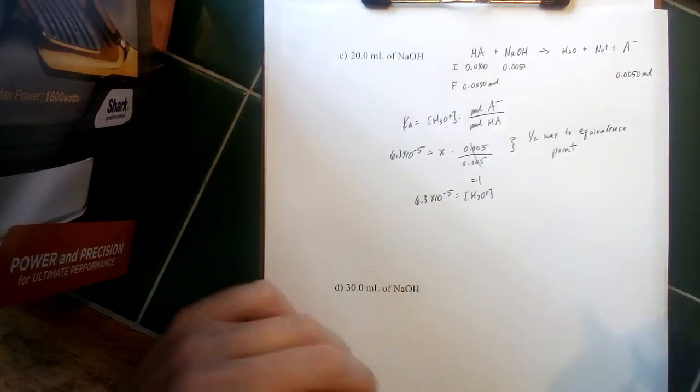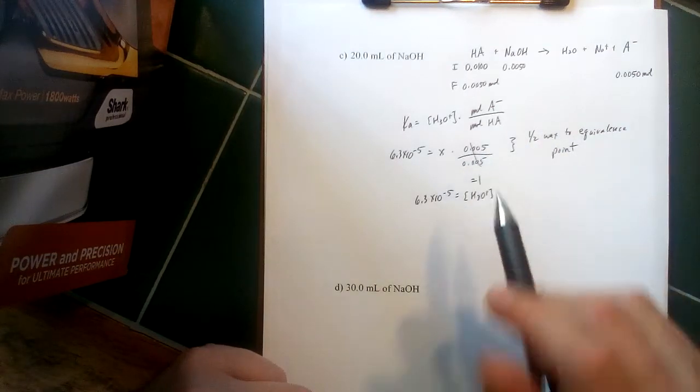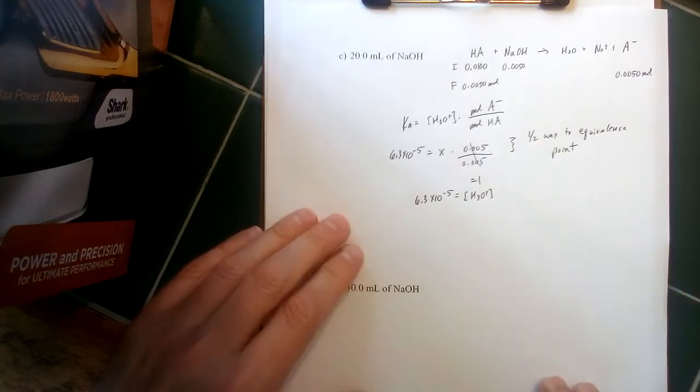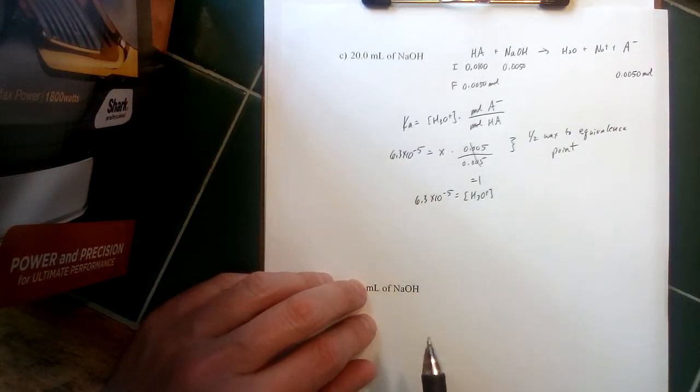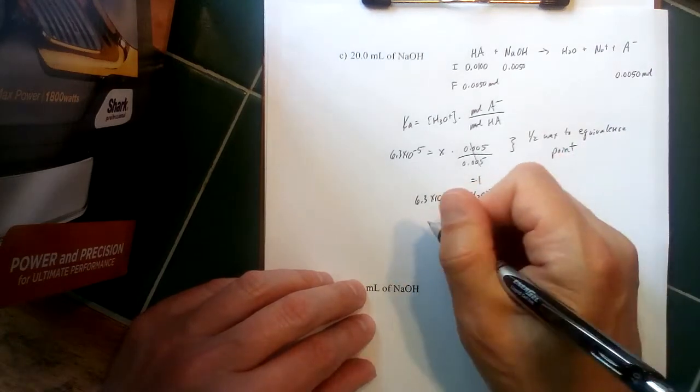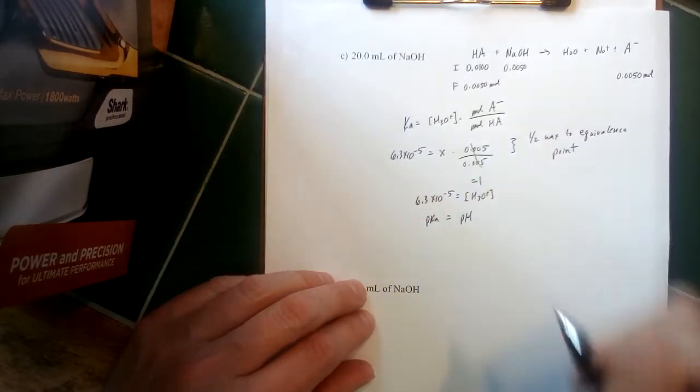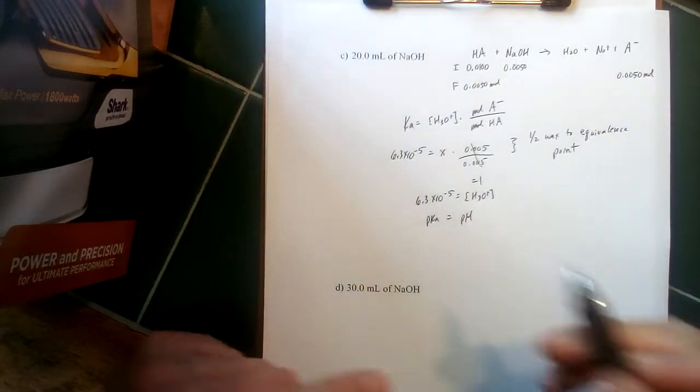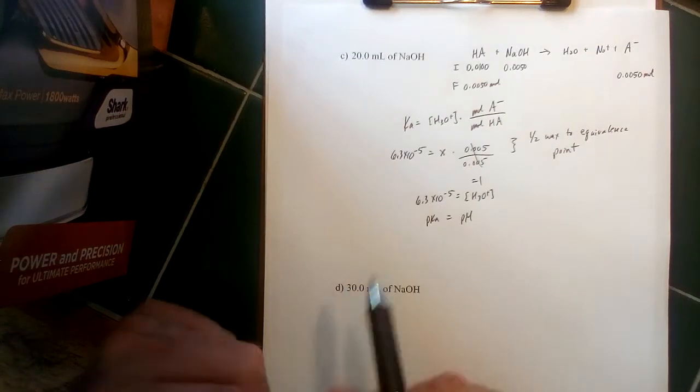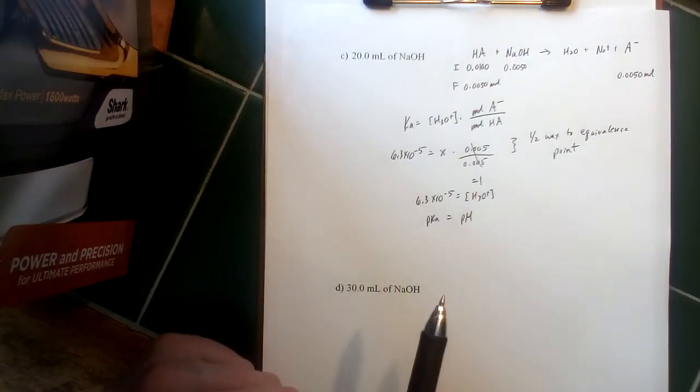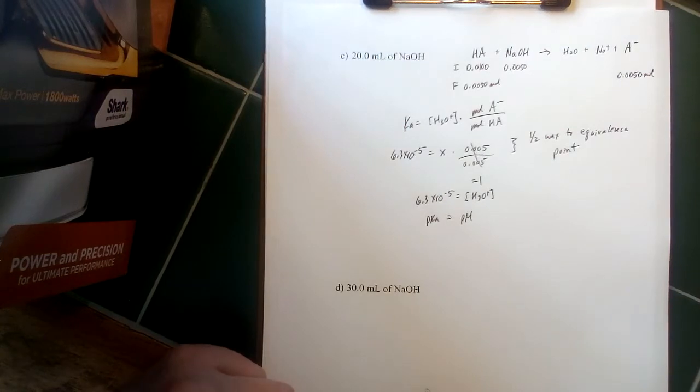Halfway there is when the concentration of the weak acid and its conjugate base will be the same. At that point, Ka is equal to the hydronium ion concentration. Although in logs, this would be pKa is equal to pH as well. If you can recognize this part of the titration for what it is, you really don't even have to do the calculation—you just take your Ka, take your negative log, and get the pH of your solution.